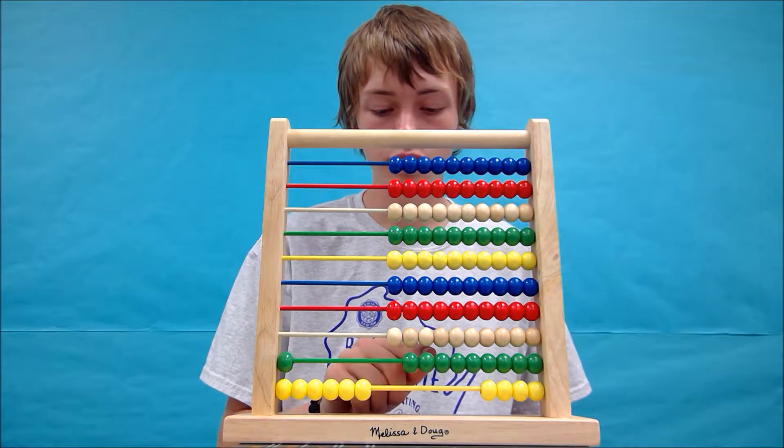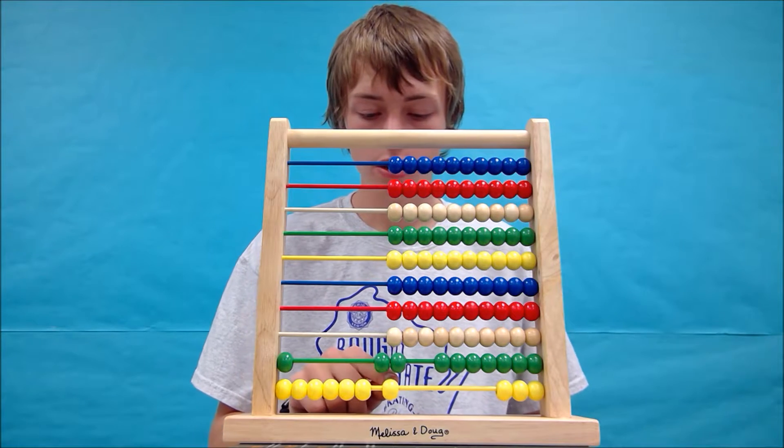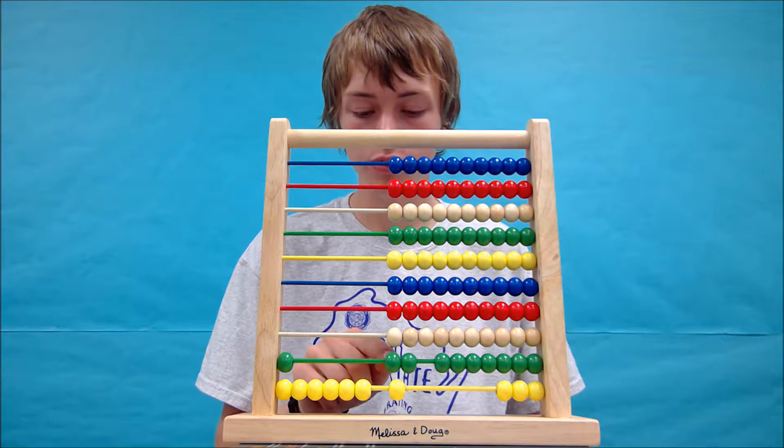Next, we need to add 21, so we will move to 1. There's 21, 1 yellow, and 2 tens.